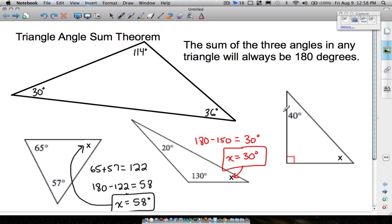And now this third example here, you only see one number, but if you recall a right angle, which is represented by that little square right there, that always represents 90 degrees. So we can add 90 plus 40, that gives us 130. 180 minus 130 is equal to 50 degrees. So therefore, that angle right there, x is equal to 50 degrees.